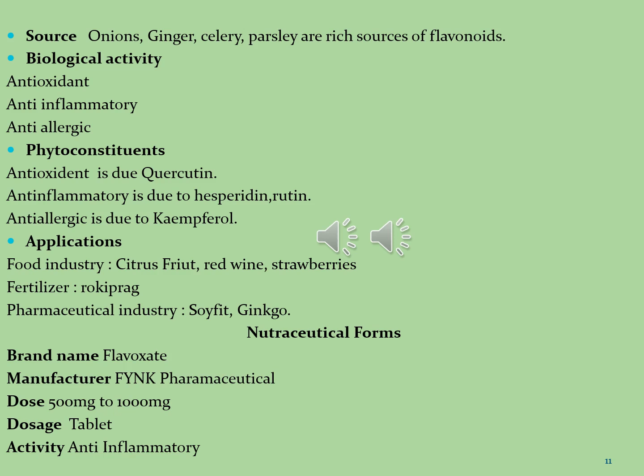Some biological activities of flavonoids that fall in the category of xanthones have rich pharmaceutical applications. Antioxidant activity is due to quercetin, anti-inflammatory activity is due to hesperidin and rutin, and anti-aging activity is due to kaempferol. Now we discuss in detail the sources and uses of quercetin.